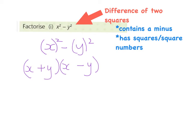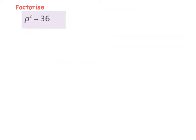Example number two: p squared minus 36. So again we need to spot, is this a difference of two squares? The first thing is it does contain the minus, which is what we wanted, and the second thing is does it contain square numbers? Well, p squared is already a square number, but 36 can be a square number.